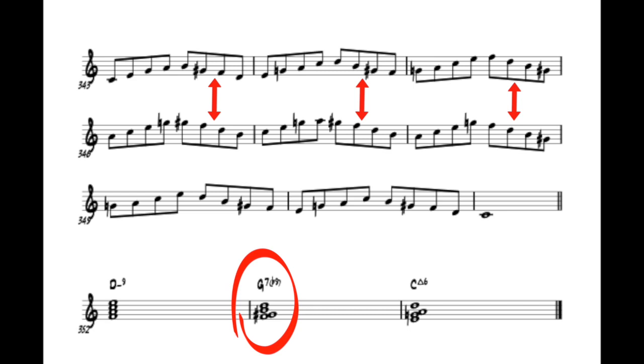So, a G7 flat 9 easily resolves back to a C major 6 or a C minor 6. After that, we did the same thing with the minor scale arpeggio and the diminished arpeggio.